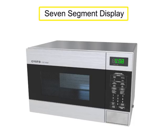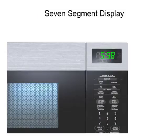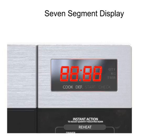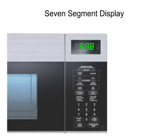Seven-segment displays are found in many common household appliances. For example, a microwave oven displays the time when not in use. A typical display has four seven-segment light-emitting diodes, or LEDs. The microwave is programmed to operate by pressing the various buttons to display cooking settings, such as the length of time food is to be cooked.